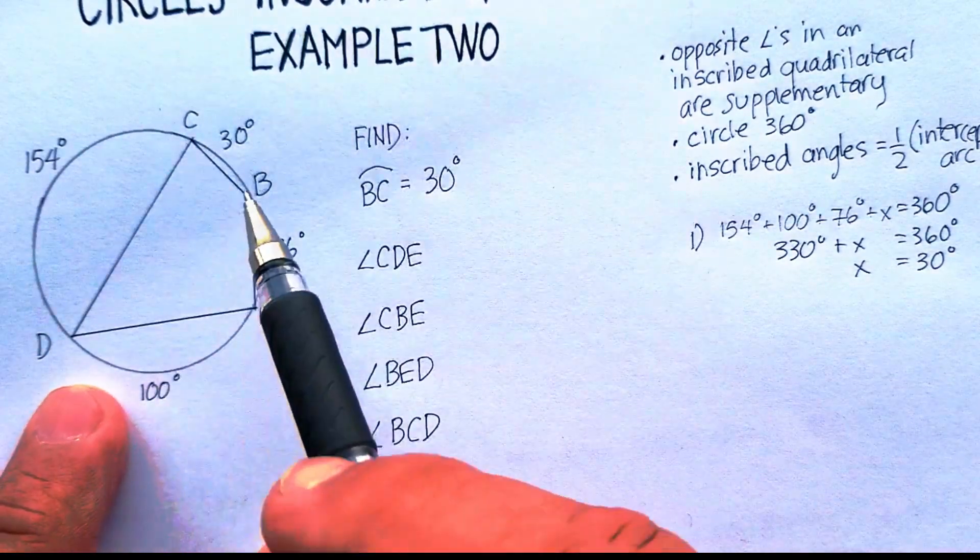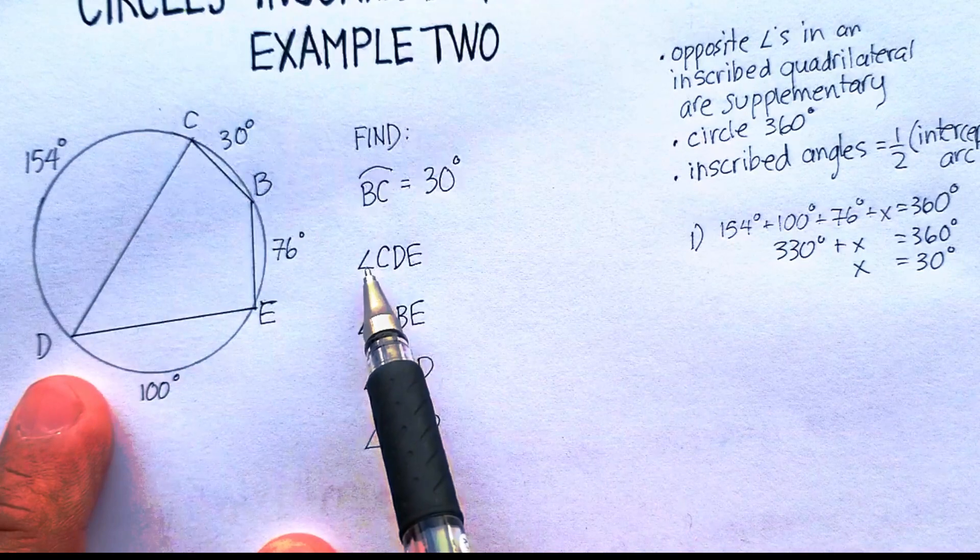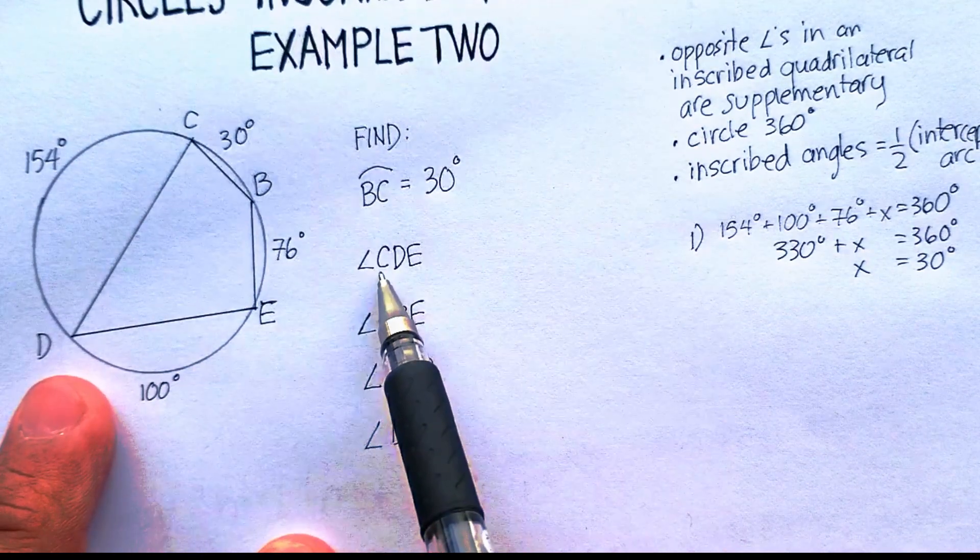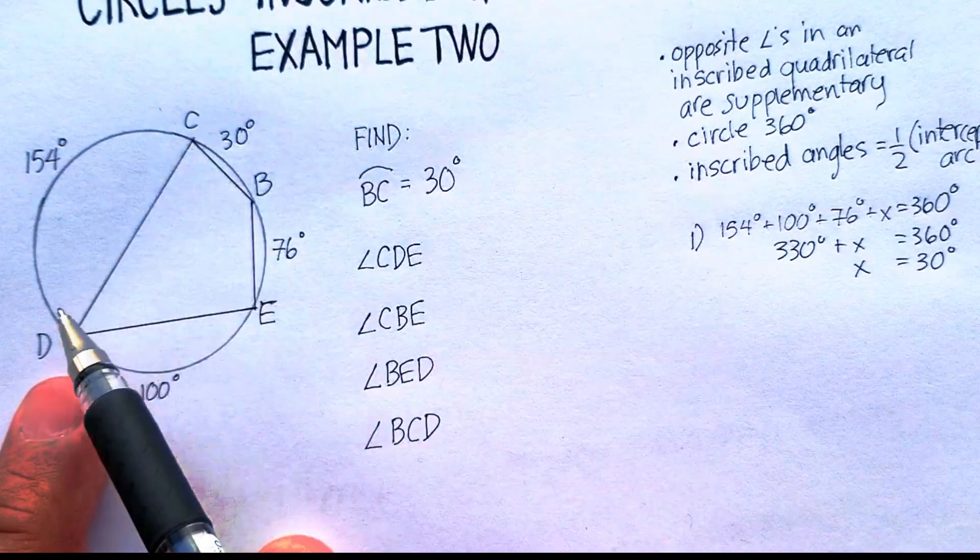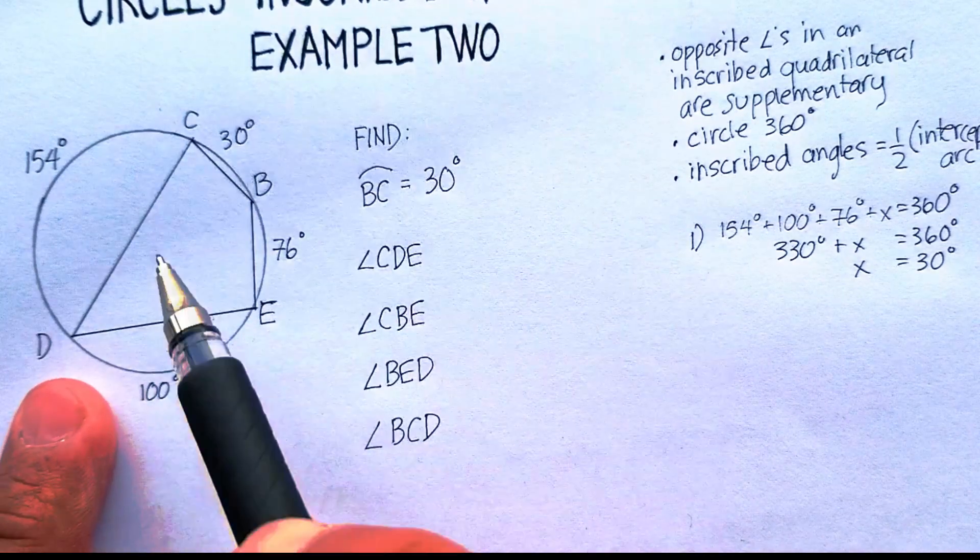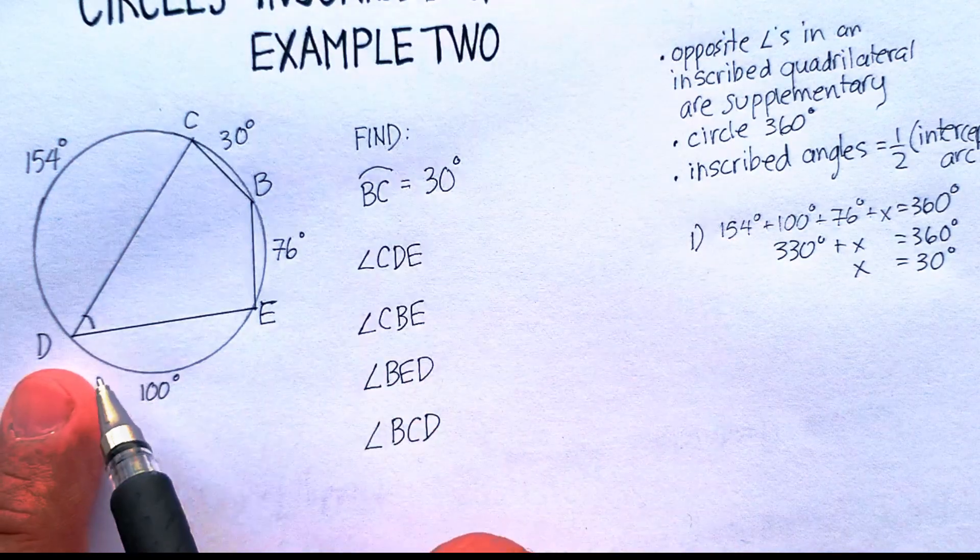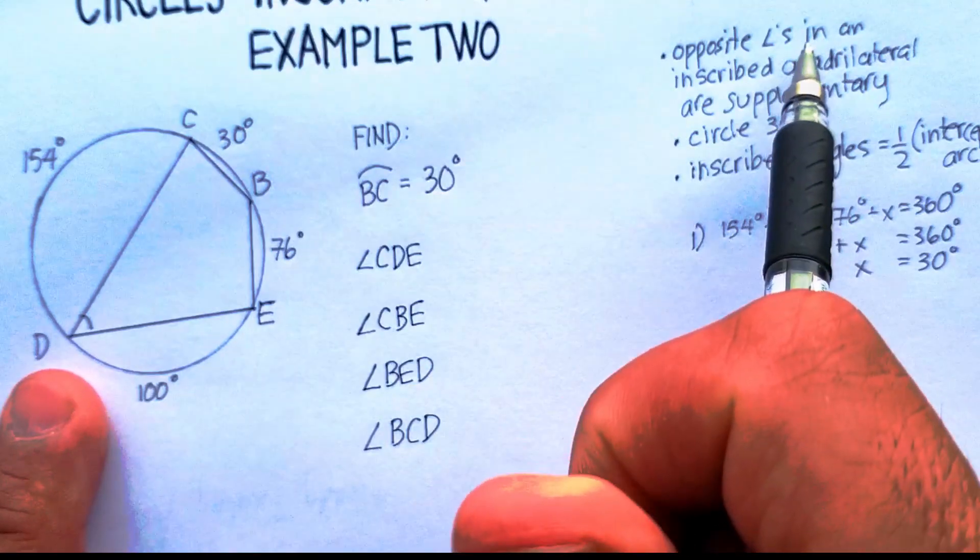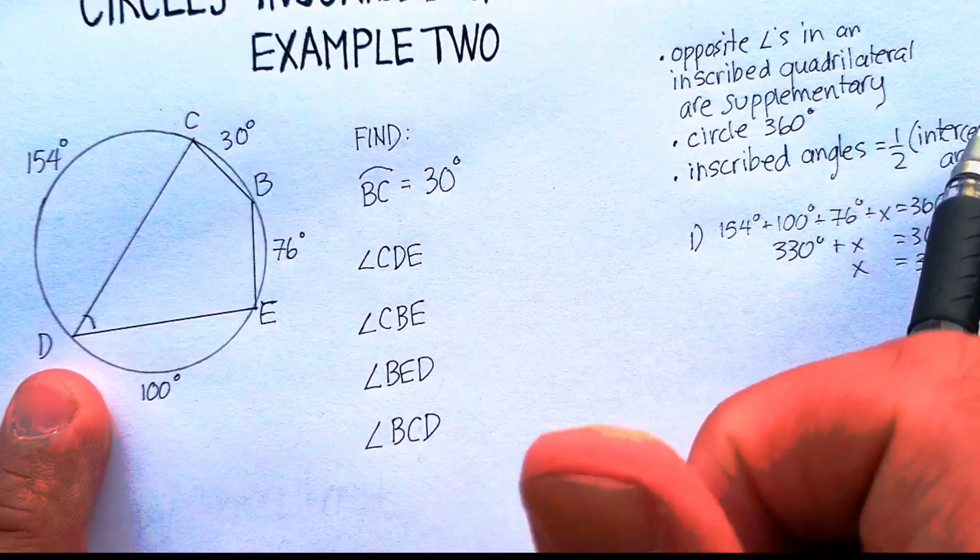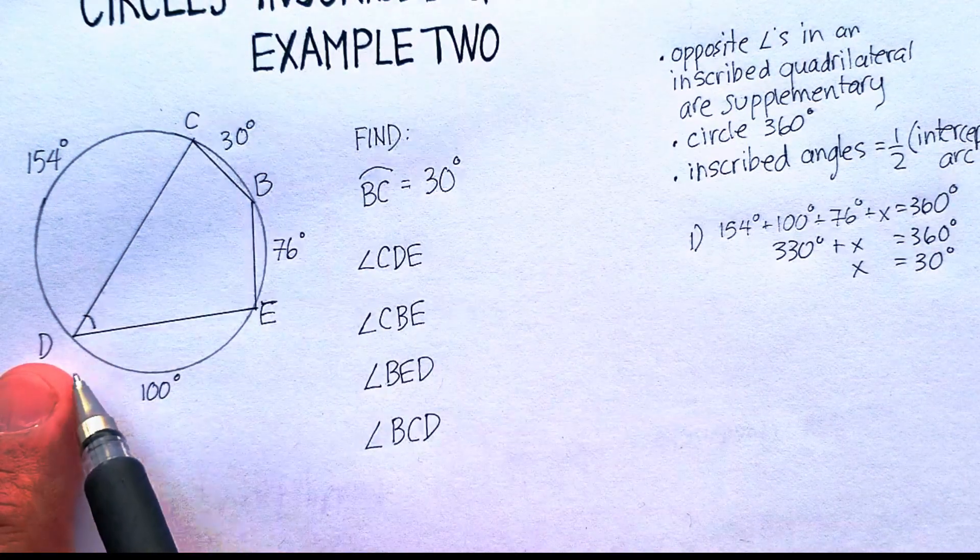Now that I have every single arc, let's see if I can do the second problem here, which is angle CDE. So I'm really looking for this angle here. Now remember what I just said. Inscribed angles equal one half of the intercepted arc.